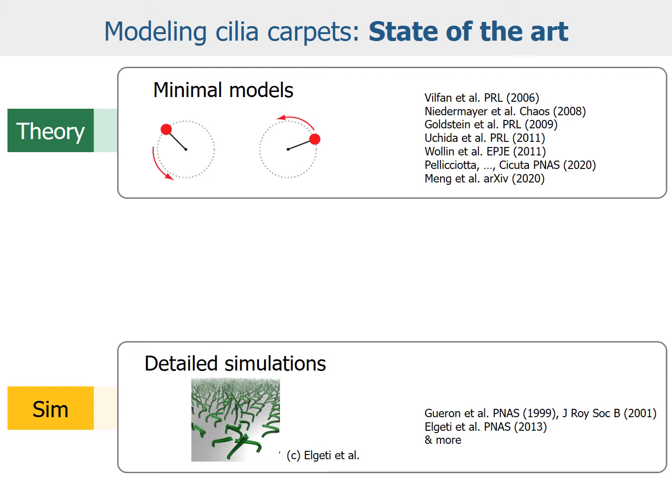Previous theoretical work addressed self-organized synchronization in cilia carpets, and can broadly be classified into two groups. There are minimal models like bead-spring models that predict how local hydrodynamic interactions between model cilia can give rise to global synchronization, at least qualitatively. On the other hand, there are detailed simulations that produce predictions comparable with experiments, but these often contain unknown parameters and require supercomputers to solve them.